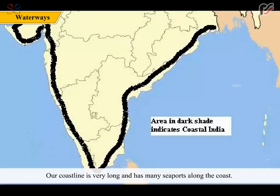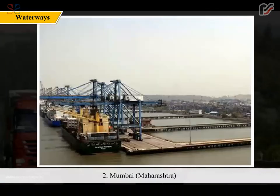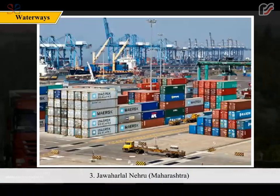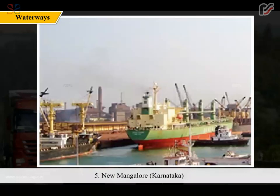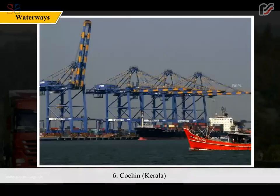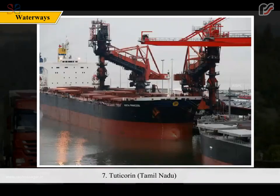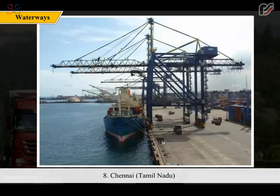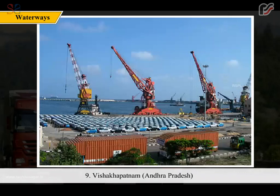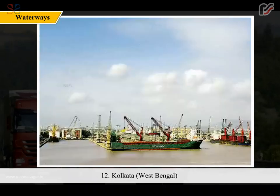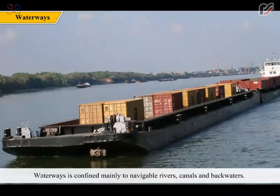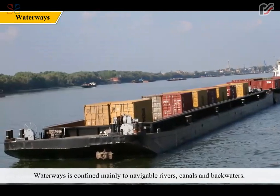Our coastline is very long and has many sea ports. Along the coast, some of the ports are very big and busy: 1. Kandla, Gujarat; 2. Mumbai, Maharashtra; 3. Jawaharlal Nehru Port, Maharashtra; 4. Marmagao, Goa; 5. New Mangalore, Karnataka; 6. Cochin, Kerala; 7. Tuticorin, Tamil Nadu; 8. Chennai, Tamil Nadu; 9. Visakhapatnam, Andhra Pradesh; 10. Paradeep, Odisha; 11. Haldia, West Bengal; 12. Kolkata, West Bengal. Waterways are confined mainly to navigable rivers, canals and backwaters.